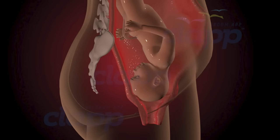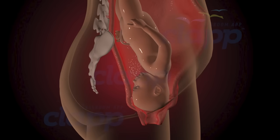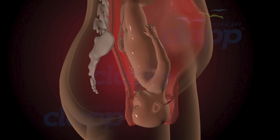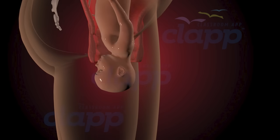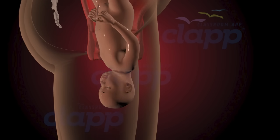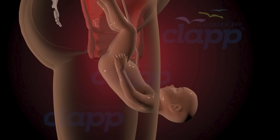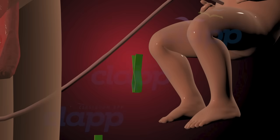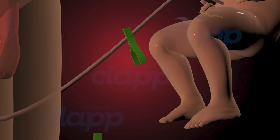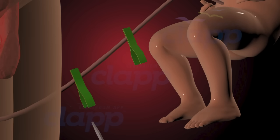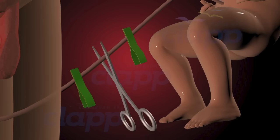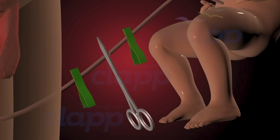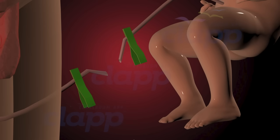The transition phase marks the final stretch of labor, where the cervix fully dilates to 10 centimeters. With one final push, the baby emerges into the world, greeted by the loving arms of the mother and the cheers of the medical team. Once the baby is born and the cord stops pulsating, the doctor gently clamps the cord in two places, usually about 4 to 6 inches from the baby's belly, then cuts the cord between the two clamps, creating a clean and safe separation.